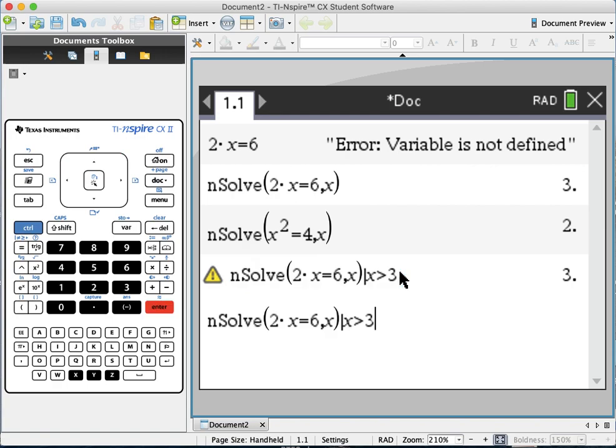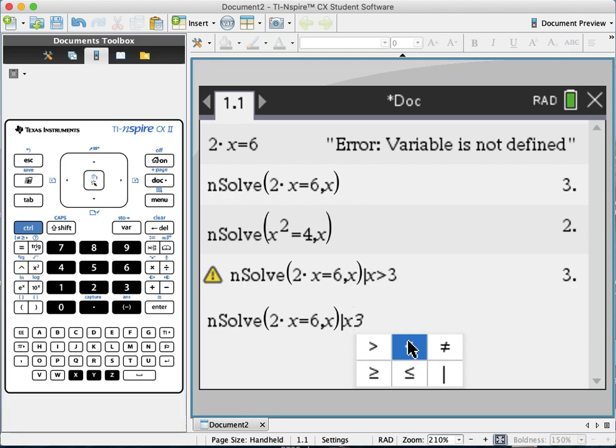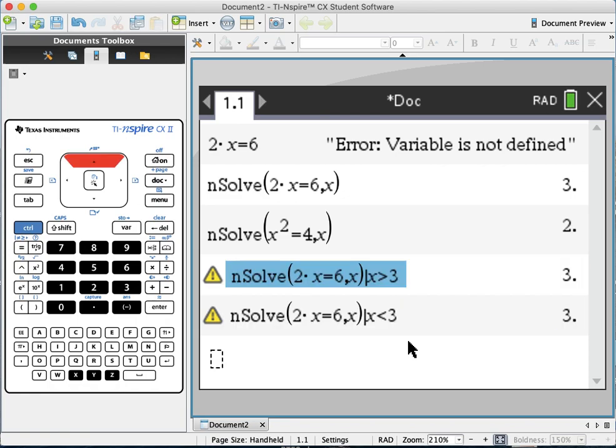If I go up because I don't want to type so many times, I can delete and check x smaller than 3 to see if there are solutions smaller than 3. There are none, so x equals 3 is the only solution.